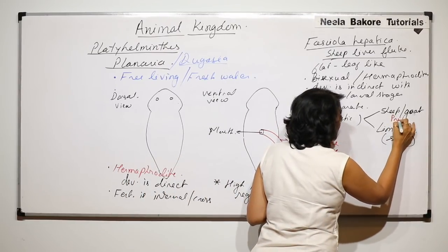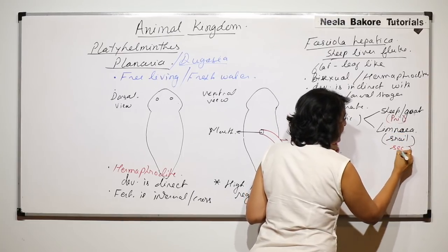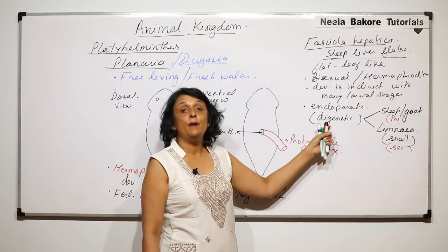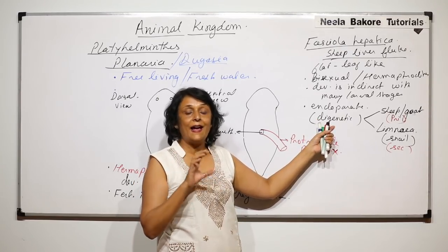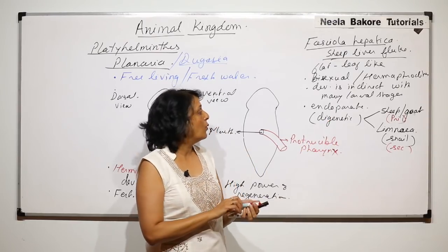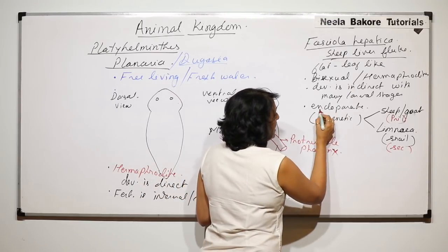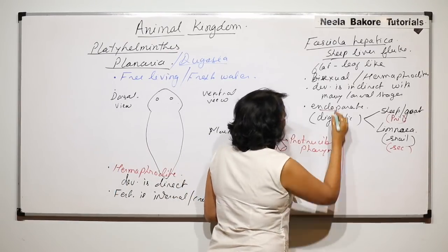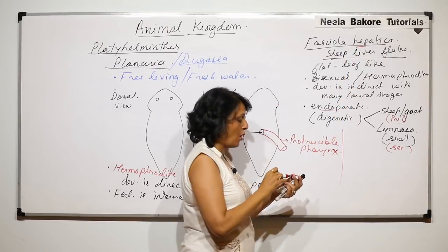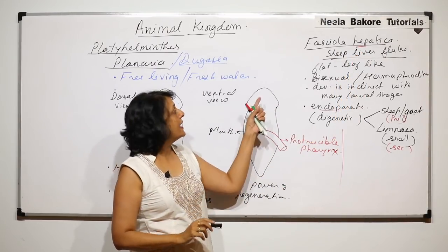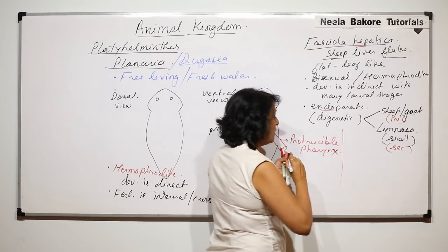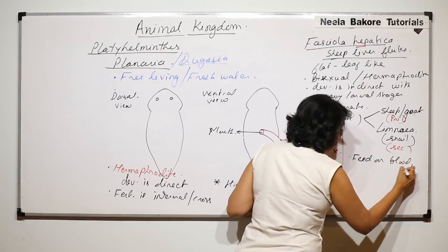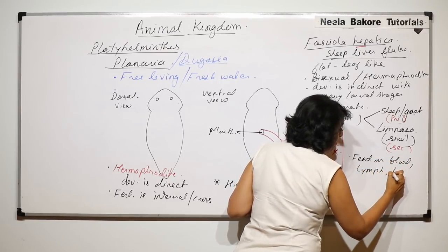Sheep or goat is the primary host and the snail is the secondary host. The primary host is the one in which sexual reproduction is completed. The word 'hepatica' is associated with liver, which is why we also call it the liver fluke. They feed on blood, lymph, and blood cells.